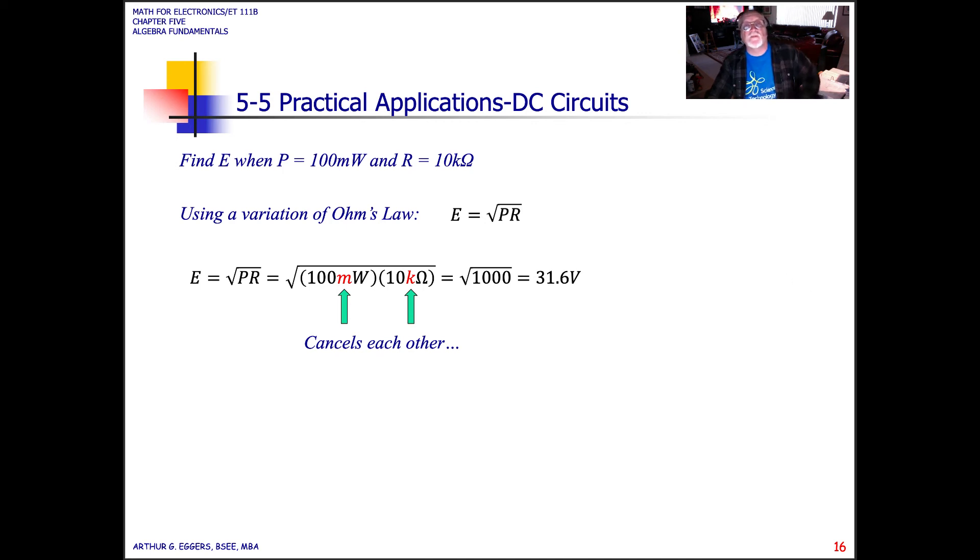In this case, we're going to use a variation of Ohm's Law where voltage is equal to the square root of power times resistance. When we put our values in, 100 milliwatts and 10k ohms, you can see milli, 10 to the minus third, and k, 10 to the third, are going to cancel out. All we're really left with under the radical is 100 times 10, which is 1,000. We take the square root of 1,000, and we get 31.6 volts. The manipulation makes solving the problem a little easier.